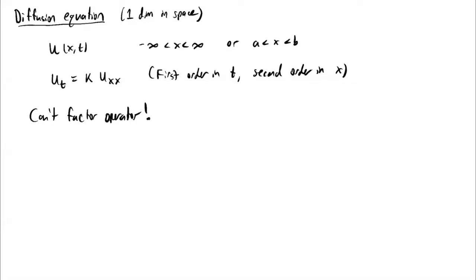The diffusion equation says that the derivative with respect to t of the solution is some constant k — a physical constant — times the second derivative with respect to x. Because it's first order in t and second order in x, the big difference compared with the wave equation is that we can't factor the equation like we did for the wave equation. This contributes towards a higher level of difficulty in understanding how to solve it.